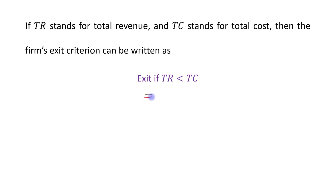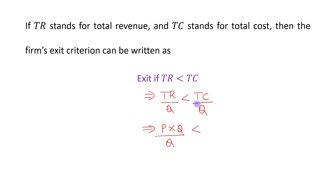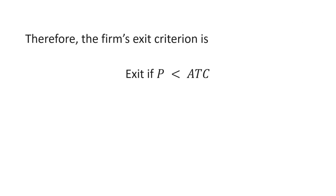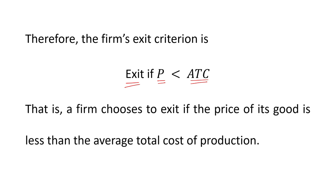If we divide both sides of the equation by Q (output), we get TR/Q less than TC/Q. TR/Q equals price, since TR equals price times quantity, and TC/Q equals average total cost. Therefore, the firm's exit criteria is: exit if price of the good is less than the average total cost.